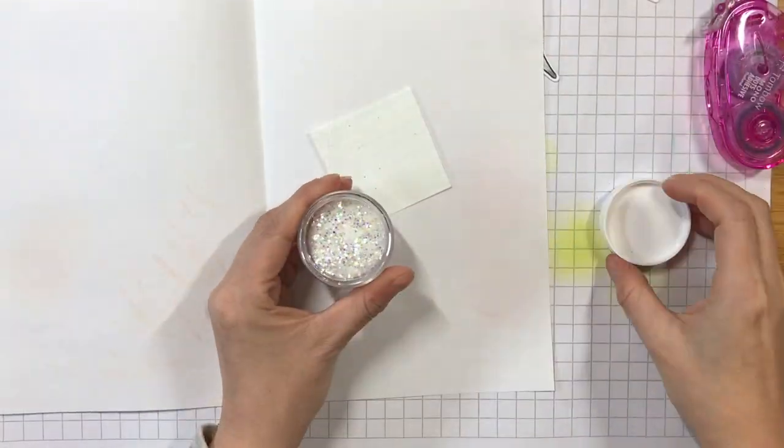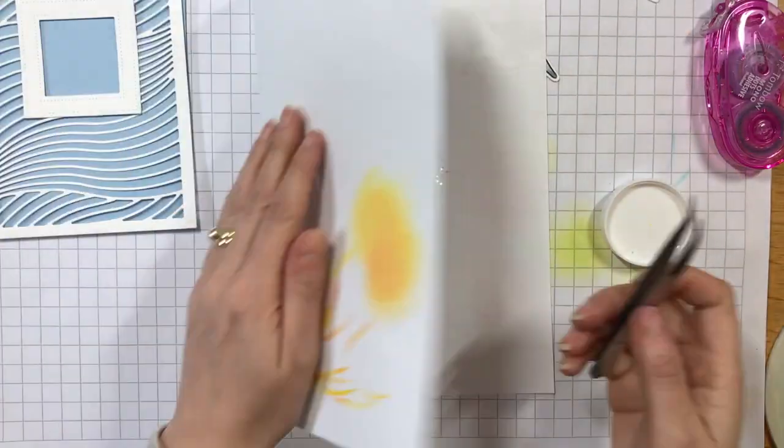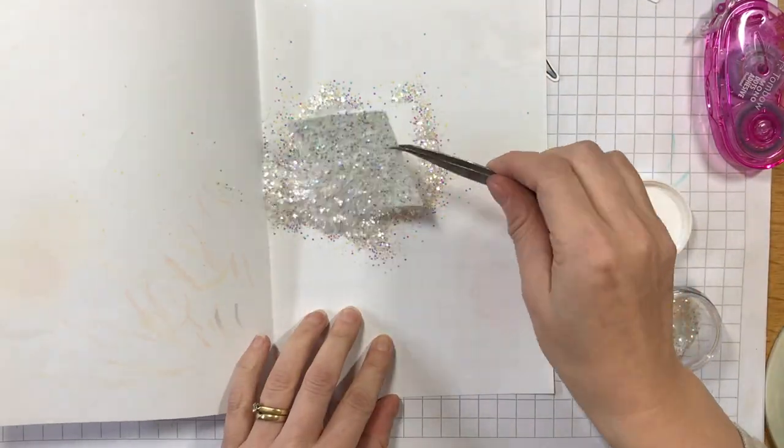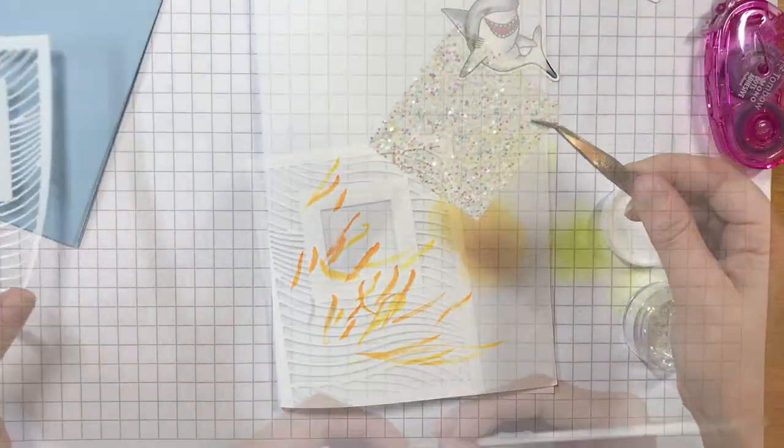I covered the square in glitter and pressed down firmly to make sure it was stuck well to the cardstock. I added score tape behind the frame and stuck the glittered panel in place, pressing down well.